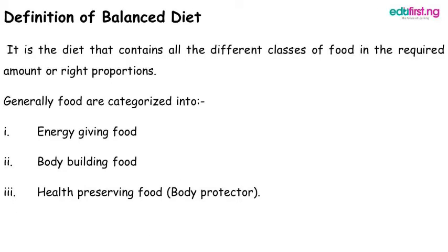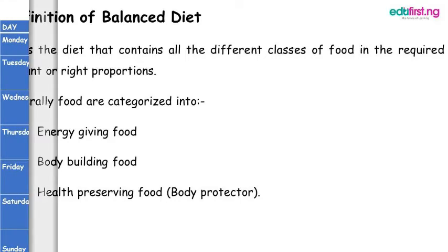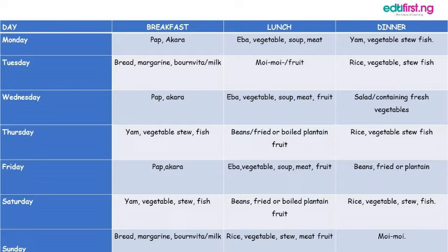A balanced diet is a diet that contains all the different classes of food in the required proportion or required amount. Generally, food is categorized into energy-giving food, body-building food, and health-preserving food — also known as body protectors. A typical timetable for a balanced diet meal is shown on the screen, and students should be able to make something similar that contains all the kinds of food, making it a balanced diet.